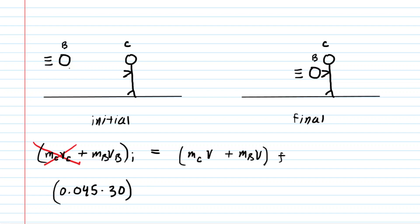So you're going to put 30 in for that incoming velocity of the ball as it approaches the catcher. On the other side we have the mass of the catcher which was 60 kilograms times v plus the mass of the ball which is 0.045 kilograms times v.